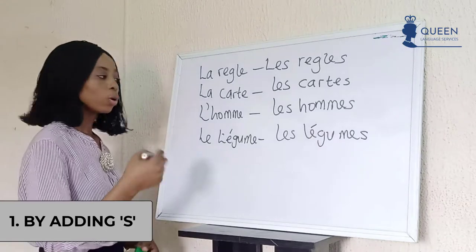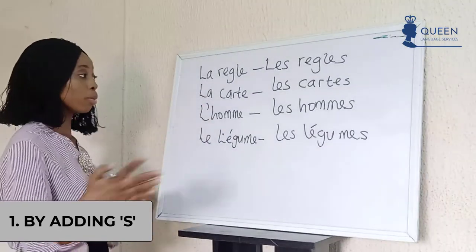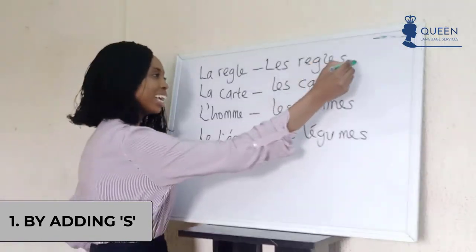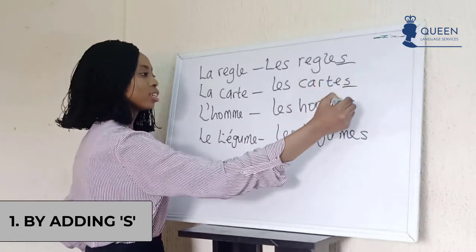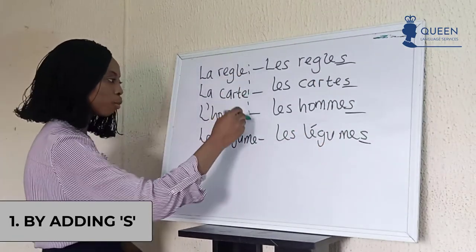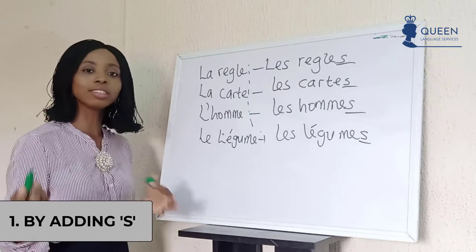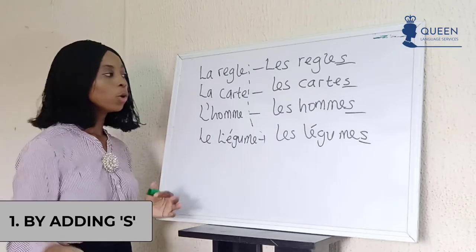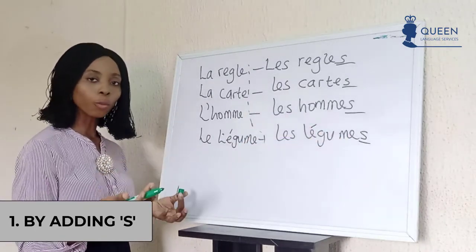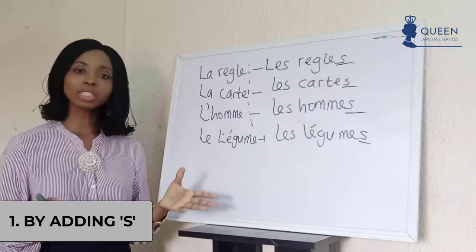So we have so many words like that — just adding an -s to the singular form to give us our plural form. Apart from just adding -s, there are other ways for us to determine our plural form in French.